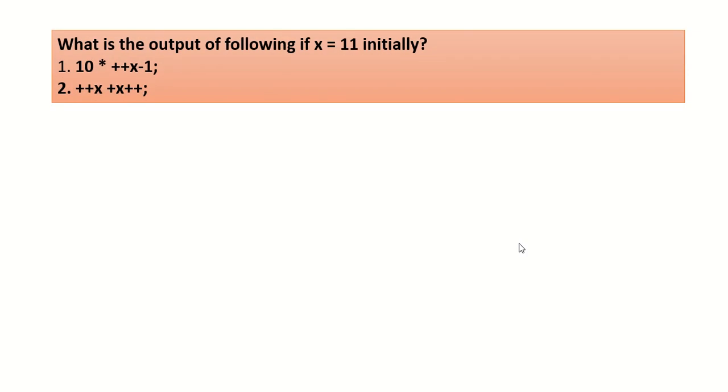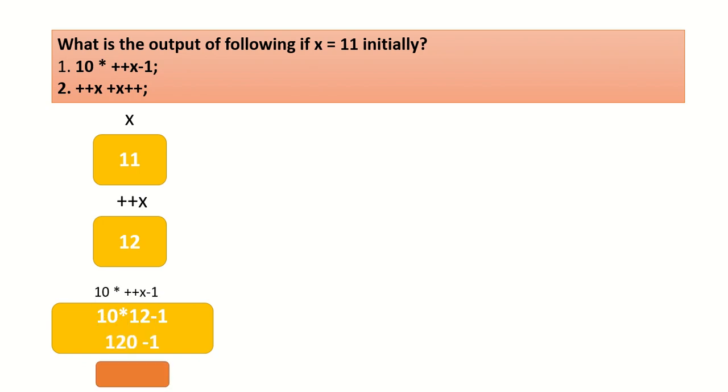The next statements deal with unary operators. X value given is 10, then x equals 11. You have to find ++x which becomes 12, and finally 10 times ++x minus 1 will give 10 times 12 minus 1, which is 120 minus 1 equals 119. The next one is x value is 11, ++x and x++, and the answer goes like this.